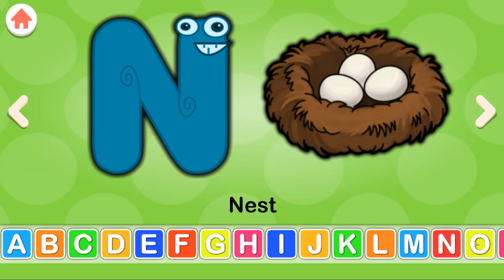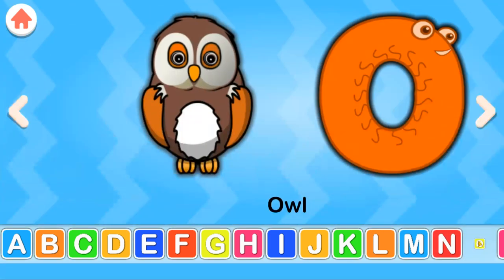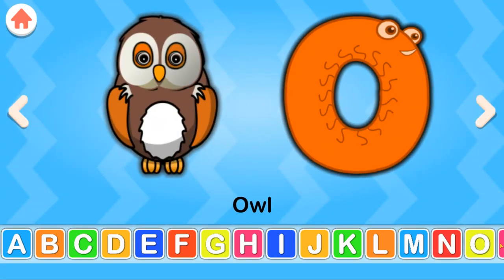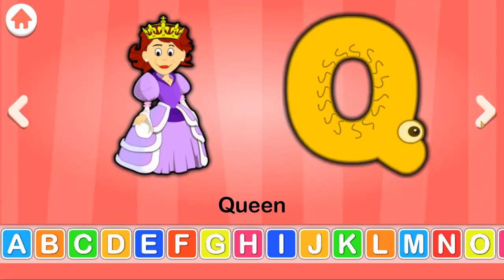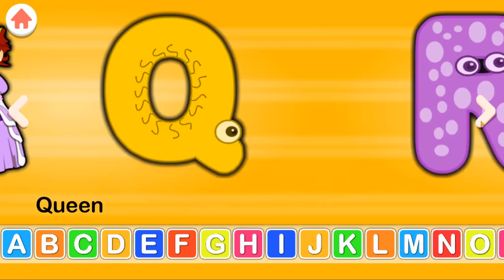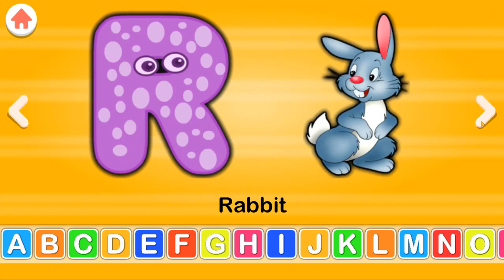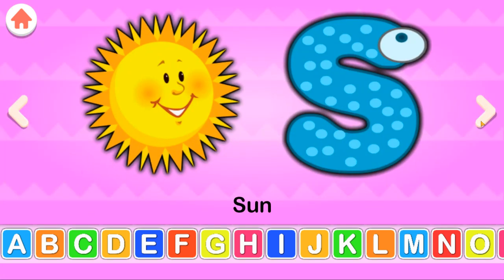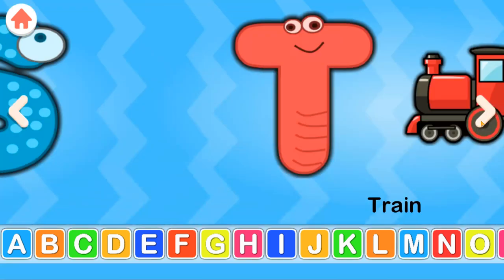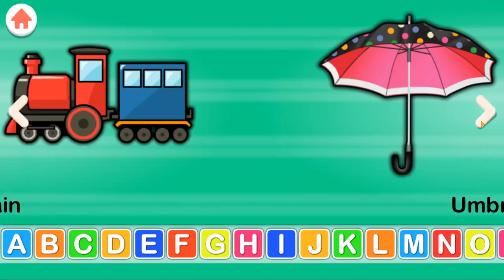M for mouse, N for nest, O for owl, P for pig, Q for queen, R for rabbit, S for sun, T for train.